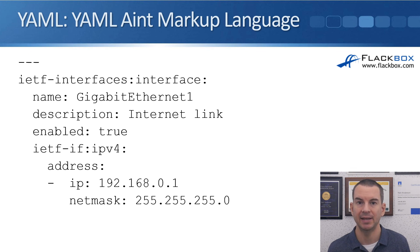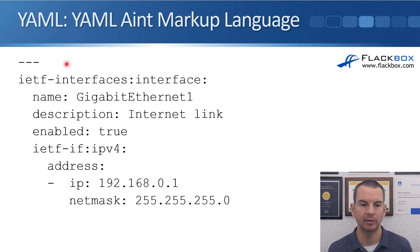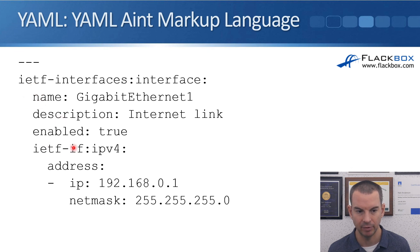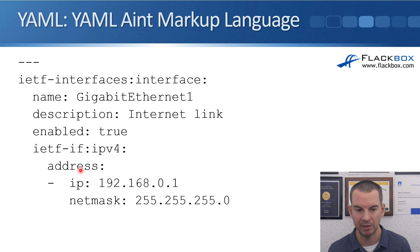Here is an example of the YAML syntax. It starts with three dashes, then we've got IETF interfaces, interface, and key-value pairs separated by a colon. Name, description, enabled, and IETF-IF are all at the same indentation level — typically two spaces for each indentation level. Sub-information like the address on that interface is indented another two spaces. Because you can have multiple addresses on an interface, there's a list below that, also indented.